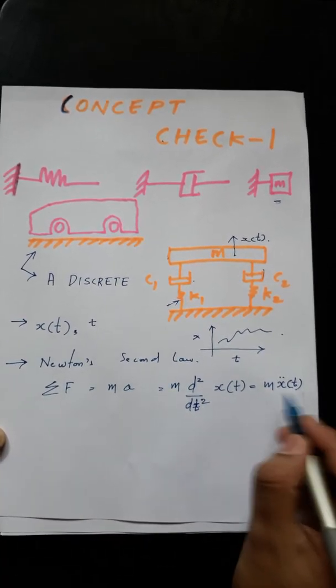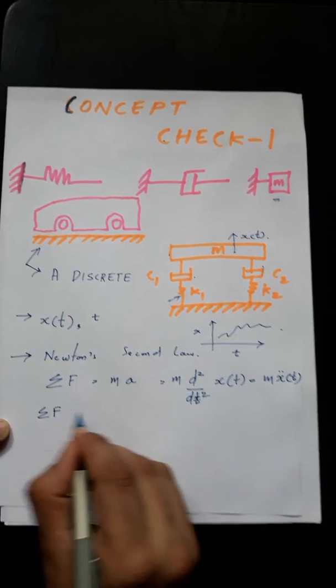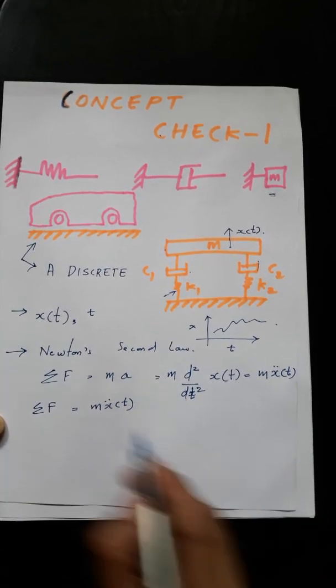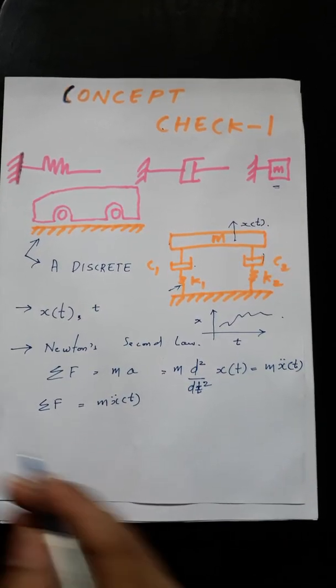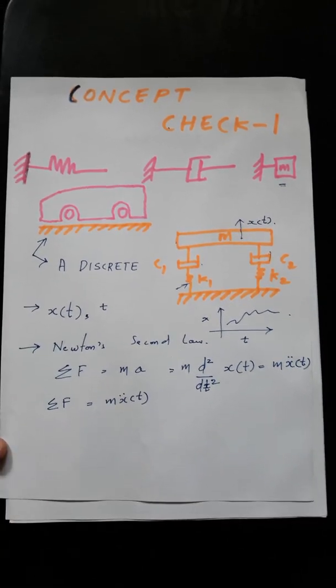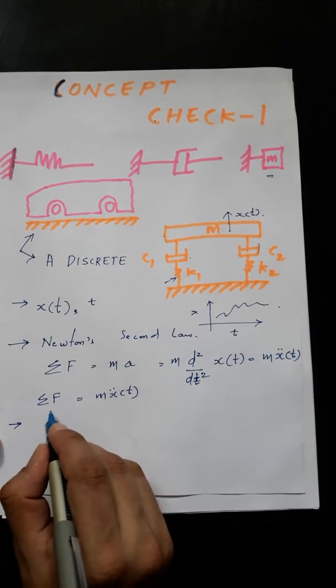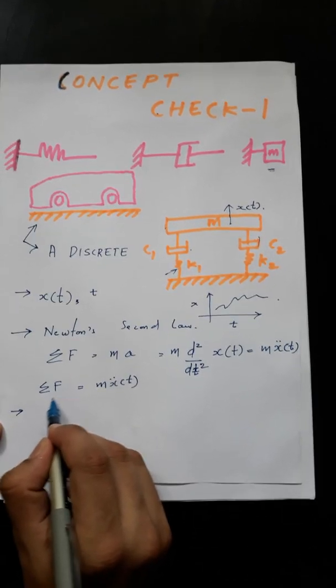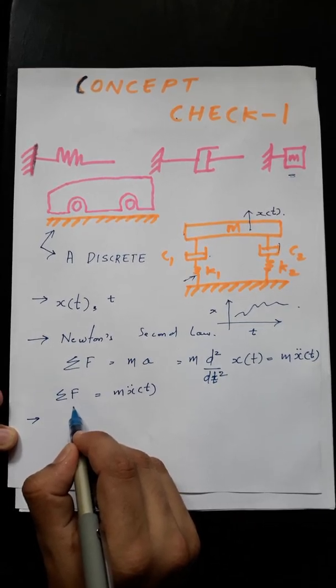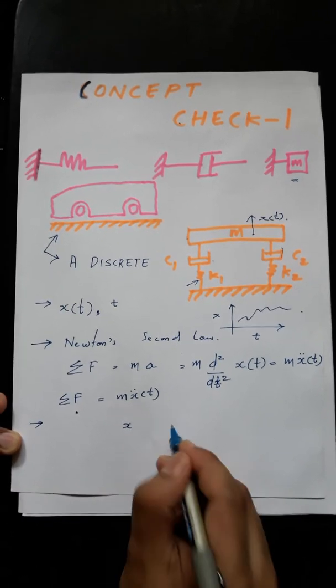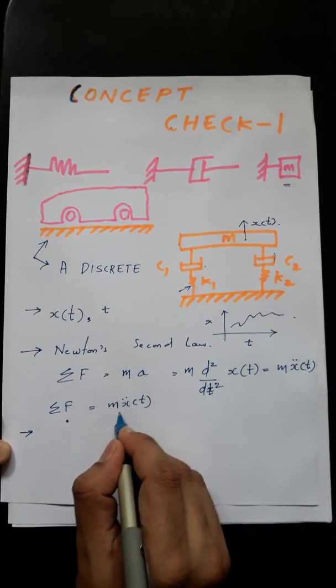So acceleration is nothing but the second derivative of your response. So it will be d squared dt squared of your x of t. Now I will represent the second derivative as x double dot. So finally you have an equation of this kind. So this is called a differential equation because you have a derivative.